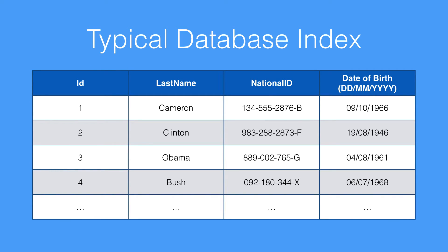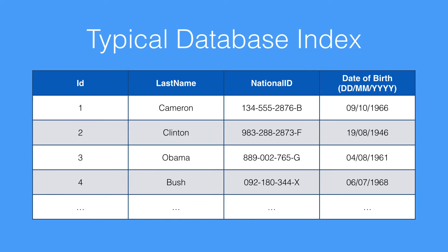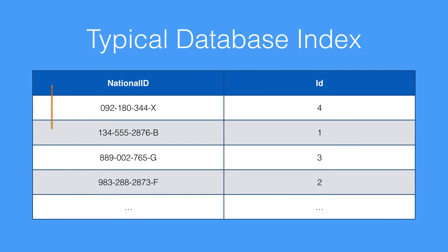What if we wanted to use a different field — such as the national ID — as an index? The way an index works is it takes a copy of the national ID and a copy of the ID and creates a brand new table. This table has the national ID field in the correct order with the ID field matching up to it. So if we wanted to search for the Obama record with ID number 3, we'd look for national ID 889-002-765G. Because all the national IDs are in order, we go down the table, find it in the correct position, retrieve the ID, and then retrieve the full record. This is much quicker than a full table search, where we'd have to go through every row in the database.